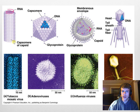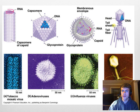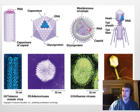Here you can see tobacco mosaic virus, adenovirus, influenza, and bacteriophage — yet they all feature this protein coat and inside some sort of genetic information: RNA, DNA, RNA, DNA — even though they come in different shapes and sizes.